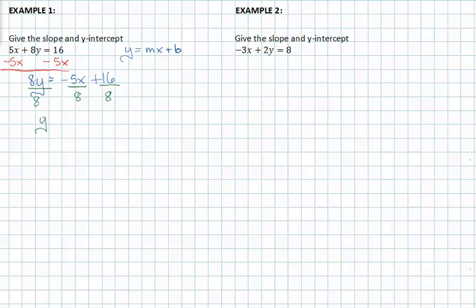We now get y equals negative 5 eighths x plus 2. This is because the eighths divide out here, nothing is a common factor between 5 and 8, so it stays 5 eighths. It doesn't reduce, but 16 divided by 8 is 2.